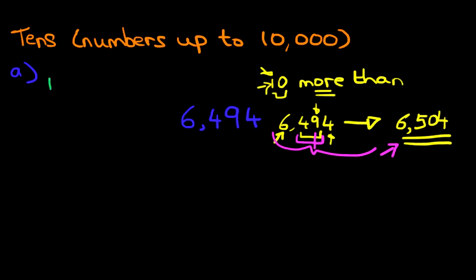Now on this side, we're going to do 10 less than. 10 less than 6,494. Now we're going to be doing less than, so we're counting backwards. Let's write the number down, 6,494. We're going to count backwards. How much are we going to count backwards by? Well, it's just the 1 in 10, the 1 in the number 10.